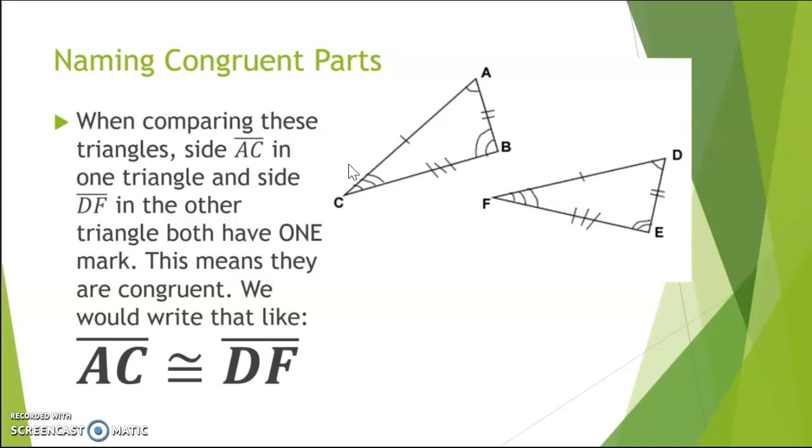And so if we look at the side lengths, the first side length that is marked with one marking is AC. And then in the other triangle, the corresponding side length that is marked with only one marking, and therefore would be the same length, is DF. You can see our fun notation for that. Remember that this bar across the top means that those side lengths actually have endpoints, of course, the vertex or vertices of a triangle. And this symbol in between here is your congruent symbol that we are going to be using a ton throughout this unit.